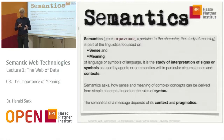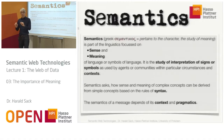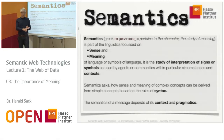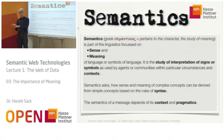Here is another concept we have to explain: syntax. Semantics depends on two other things — first on context, which we will talk about later, and on so-called pragmatics. So let's keep in mind: semantics means the meaning, and it is the science and the study of sense and meaning of language and symbols.